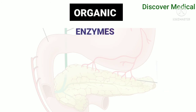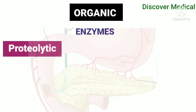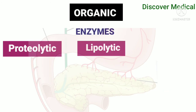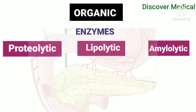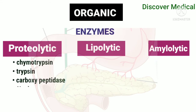Organic enzymes are classified as proteolytic, lipolytic, and amylolytic. Proteolytic enzymes include chymotrypsin, trypsin, carboxypeptidase, nuclease, and elastase.